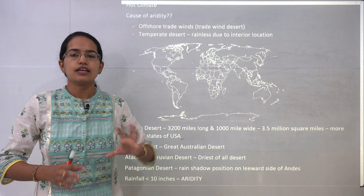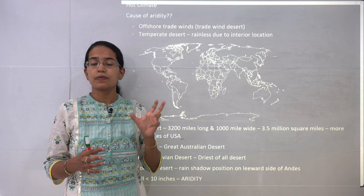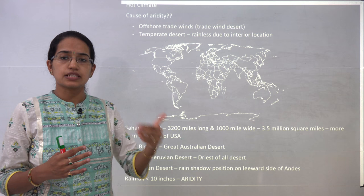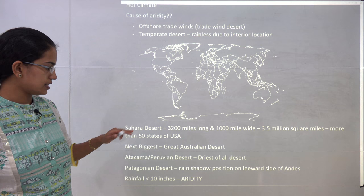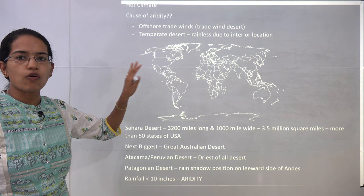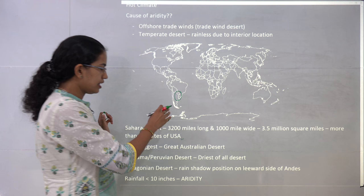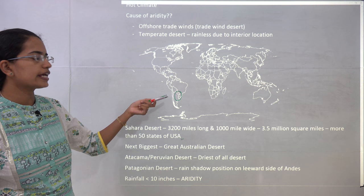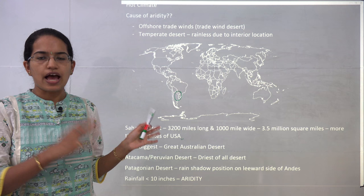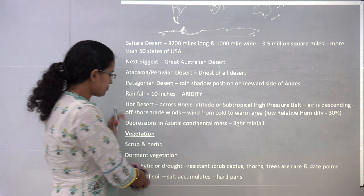The hot desert will have very less rainfall and high temperature. The diurnal range of temperature would be high — nights are extremely cold and days are extremely hot. The Sahara desert is the largest; next is the West Australian desert. The Atacama or Peruvian desert is considered the driest of all deserts. The Patagonian desert lies in the rain shadow area of the Andes, hence there is lack of rainfall. Mid-latitudinal deserts also have less rainfall due to their interior location. Rainfall is less than 10 inches, so aridity is a major characteristic.